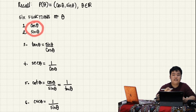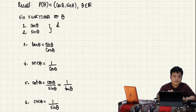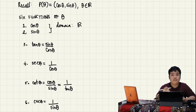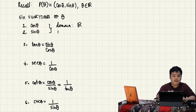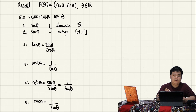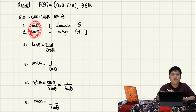In our previous lesson, the domain and range of cosine theta and sine theta are as follows. The domain is the set of real numbers, meaning any theta can be substituted into cosine and sine. And the range is from negative one to one only — those are the values that cosine theta and sine theta give.